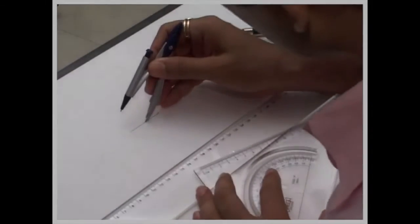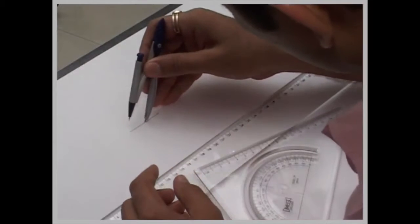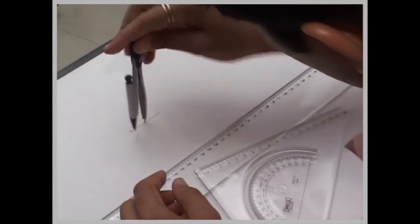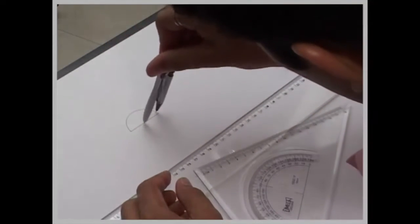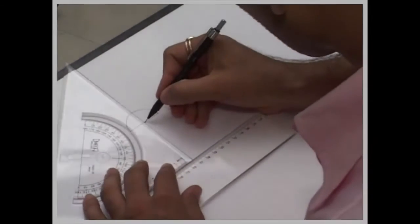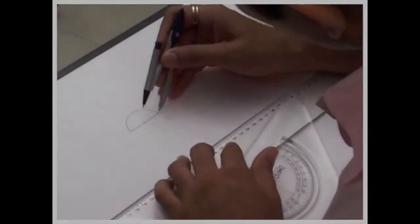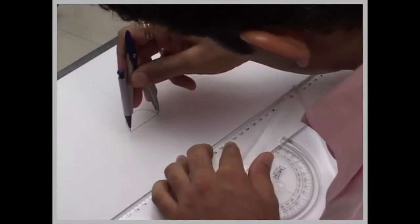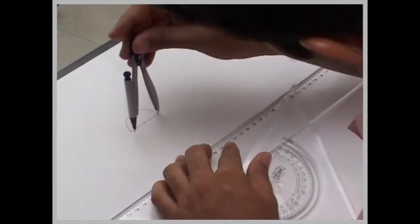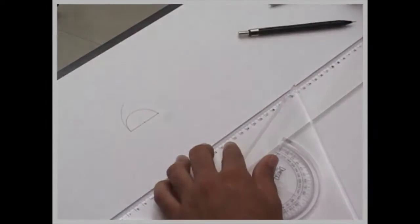Then we will mark midpoint. We will draw a circle from the center. We will draw vertical line. Then we will take this radius, cut on this side.